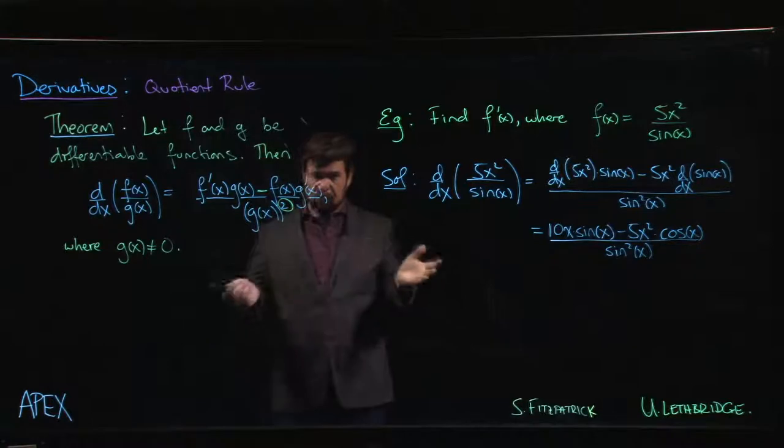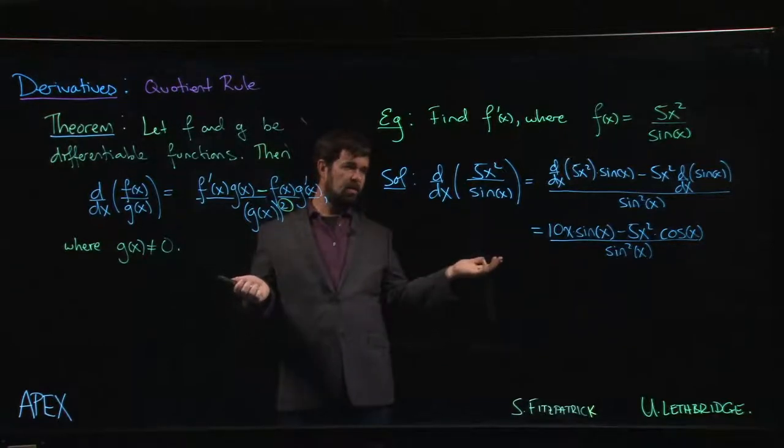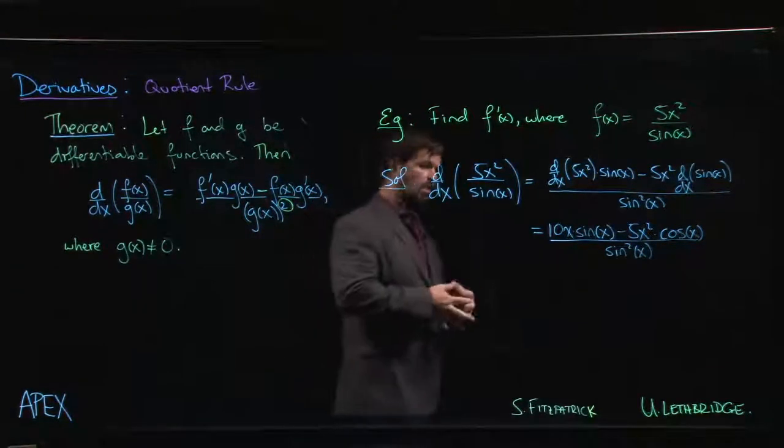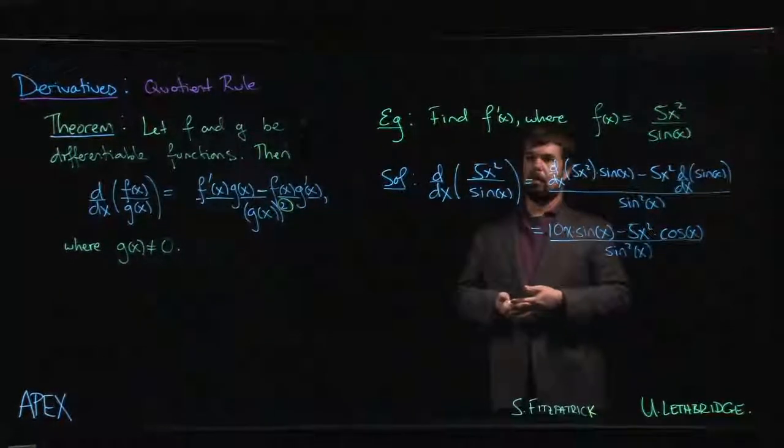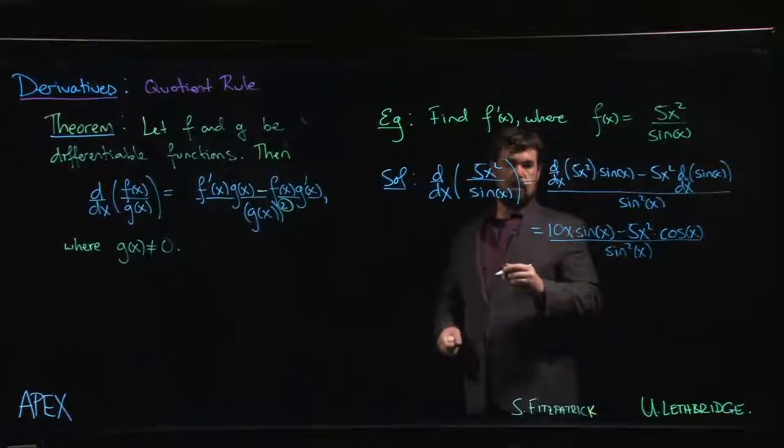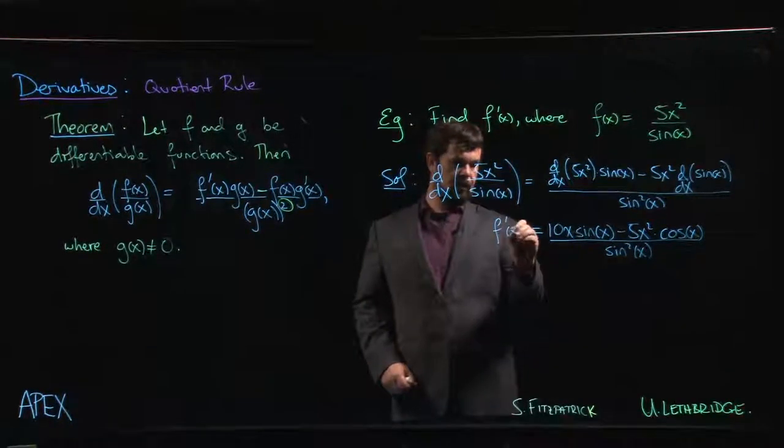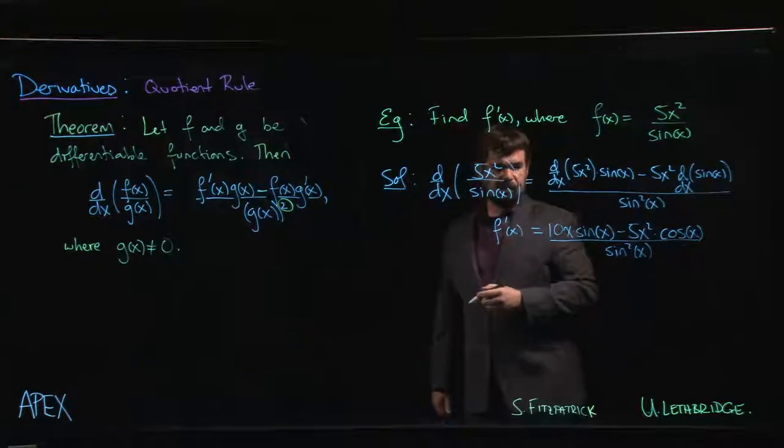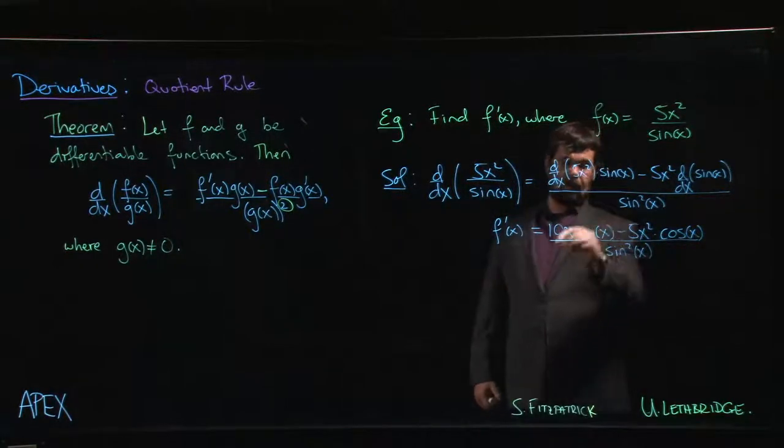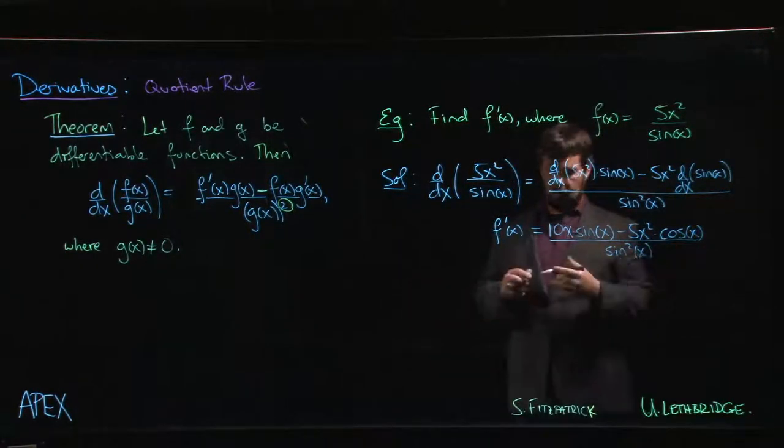And this is the point at which you stop. There's not much else you can do with this. There's no need to try to simplify further. Again, unless maybe you're doing a problem where you want to figure out something like, let's say, where f prime of x is equal to 0. In which case, perhaps you want to factor the x out from the numerator and see where it goes from there.